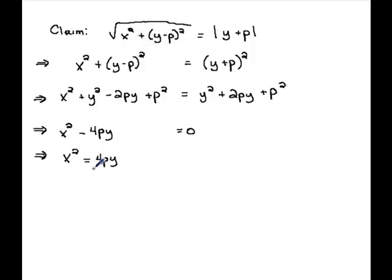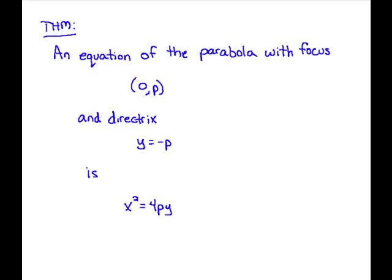And this gives us our theorem for parabolas, basically the form for parabolas. The theorem says an equation of the parabola with focus at zero comma P and directrix at Y equals negative P is X squared equals 4PY. Now, if you think about that, we're used to seeing parabolas having an equation like Y equals 3X squared or something like that. That 4P is just a constant. So if you divide both sides by it, it actually is Y equals some constant times X squared.